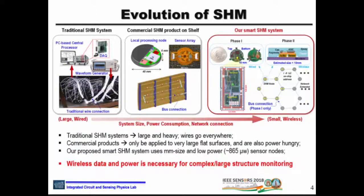Active SHM is performed by mounting piezoelectric transducers on the structure, which generally uses ultrasonic surface waves called Lamb waves for detecting any abnormality in the structure. Traditionally this is done by collecting data from each of these sensors and processing it in a centralized node, which is cumbersome — the equipment is heavier and hard to install every time.